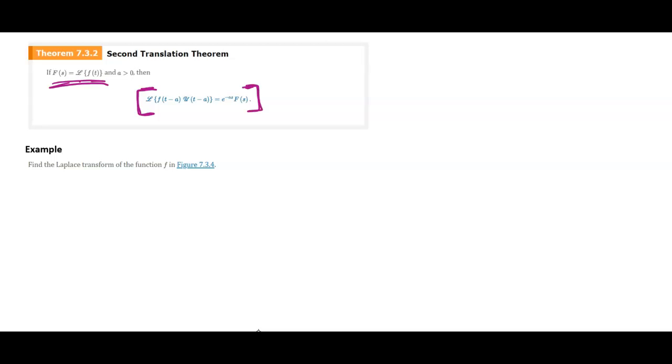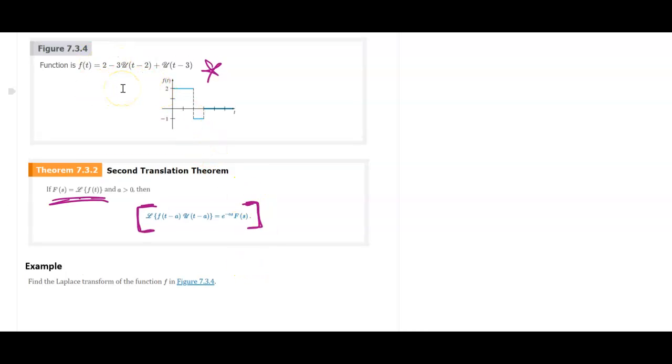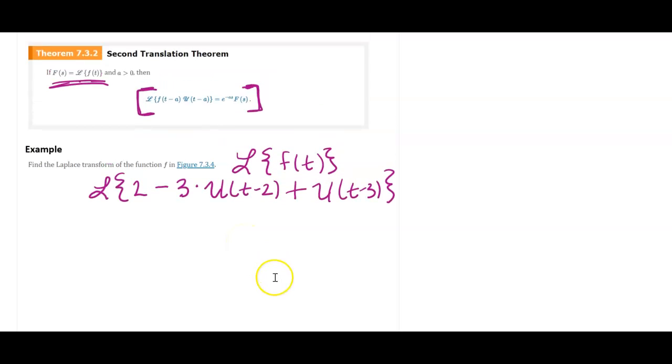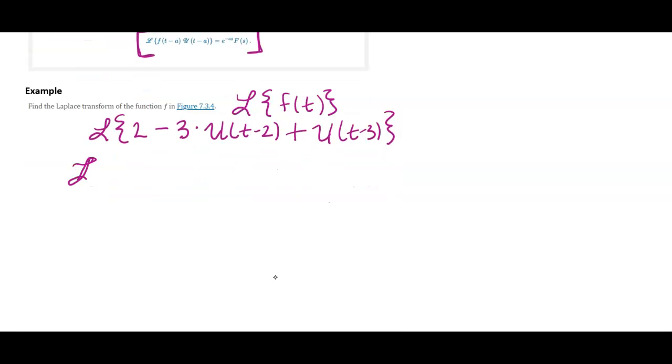So let's apply that to this function here and find that Laplace transform. So the Laplace of f of t, that's the Laplace of two minus u times, minus three, excuse me, times u of t minus two. All right, well, I'm going to split these up into each little piece here. So I'm going to say, what's the Laplace of two? Well, that's just two over s.